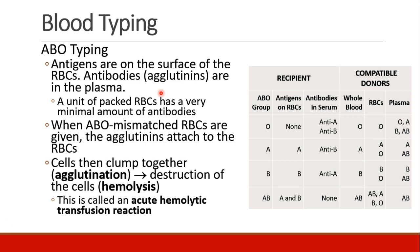When you donate blood and they separate the blood into its components, the packed red cells are full of antigens but have a very minimal amount of antibodies. When ABO mismatched red cells are given to somebody, their agglutinins — their antibodies — attach to the red cells. The cells clump together, which is called agglutination, and then they get destroyed, which is called hemolysis. This is an acute hemolytic transfusion reaction.